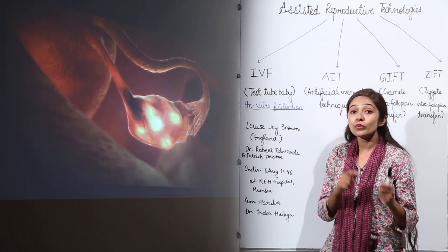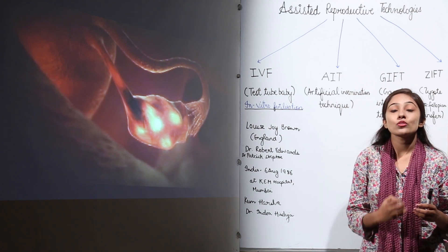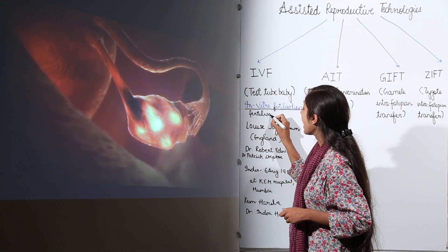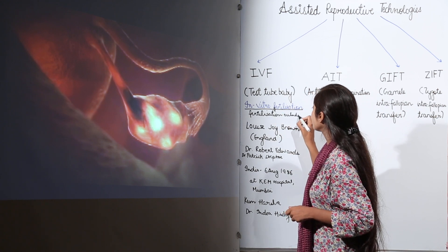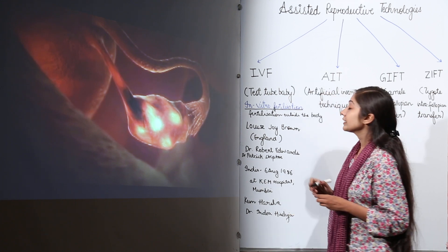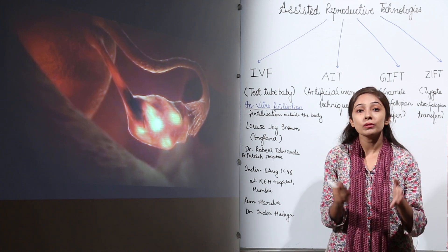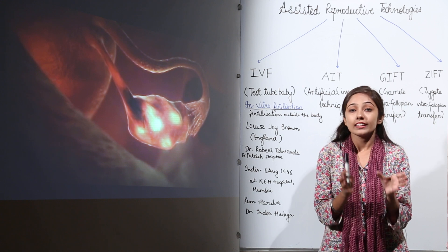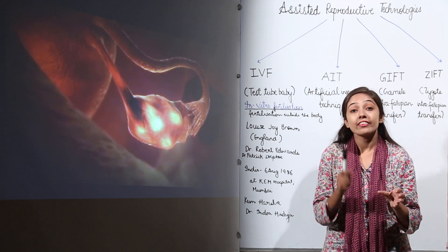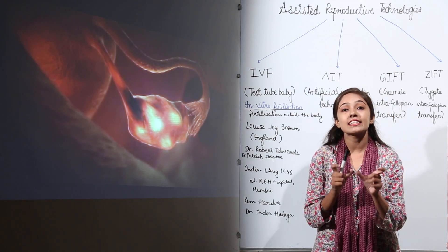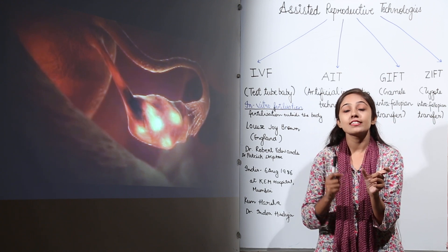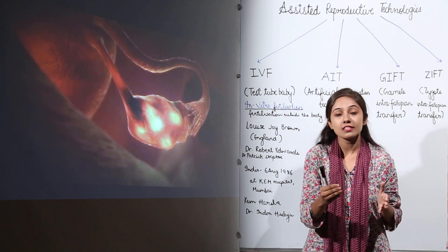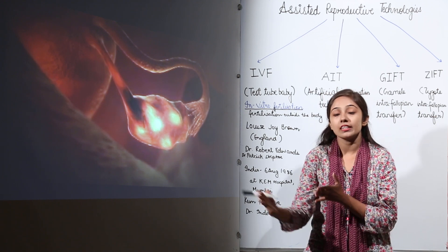What happens in this technique? It means that fertilization takes place outside the body. The same conditions must be maintained so that fertilization can occur. There is fusion of sperm and egg to form a zygote, and then that zygote divides — for example, to an eight-celled stage. That eight-celled stage zygote is transferred into the uterus, where the embryo becomes a fetus and finally grows into a child, with normal delivery.